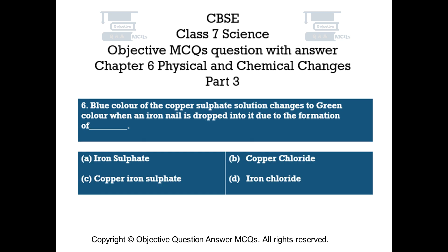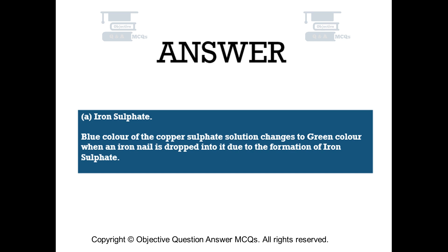Question number 6. Blue color of the copper sulfate solution changes to green color when an iron nail is dropped into it, due to the formation of: Option A iron sulfate, Option B copper chloride, Option C copper iron sulfate, Option D iron chloride. The right answer is Option A — iron sulfate. Blue color of copper sulfate solution changes to green due to the formation of iron sulfate.